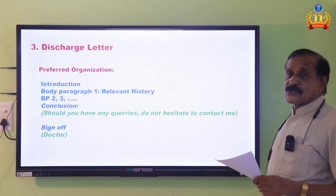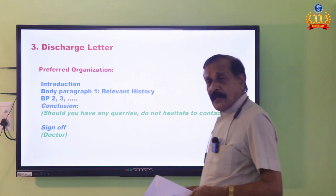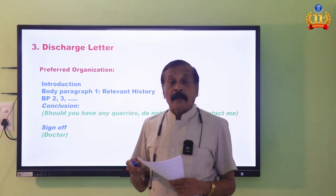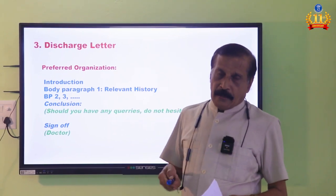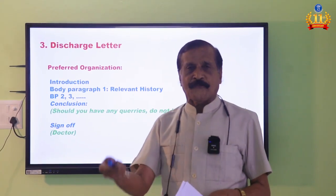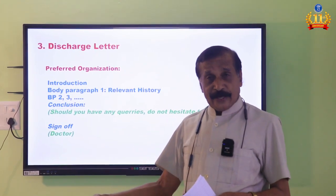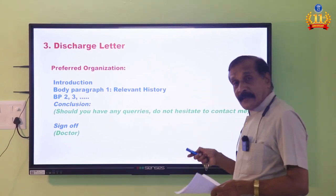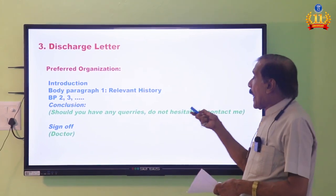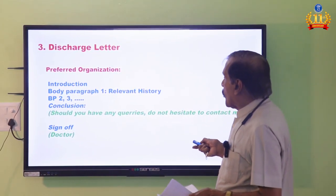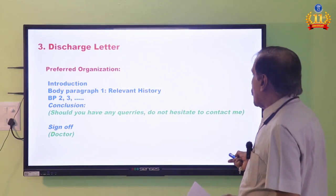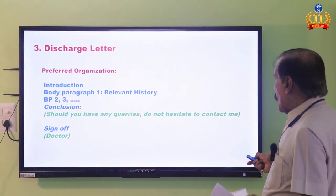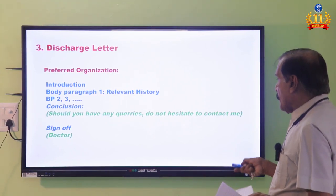The next type is the discharge letter. What is the difference between transfer and discharge? In a discharge letter, the patient has been completely cured — fully recovered. Whereas in a transfer letter, the patient is still recovering from the condition, and further medication or care is needed which they can do themselves. In a discharge letter, the patient is recovered. The preferred organization: introduction, then relevant history as BP1, then BP2, etc. In both discharge and transfer letters, it is better to give the relevant history as an early paragraph.